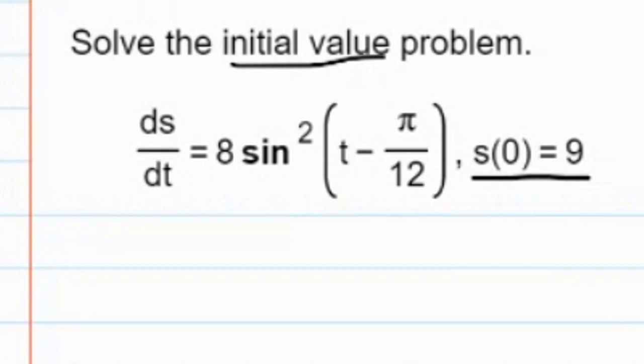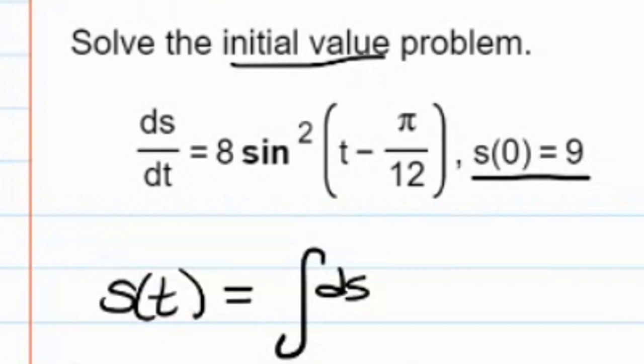If we're given ds dt, the derivative of s with respect to t, we're trying to find a function s of t, which is going to be the antiderivative of ds dt with respect to t.